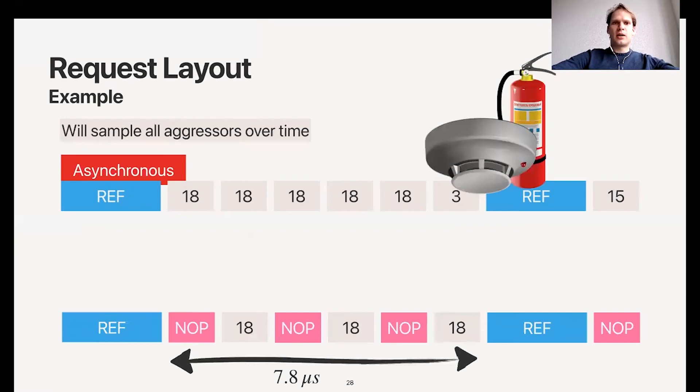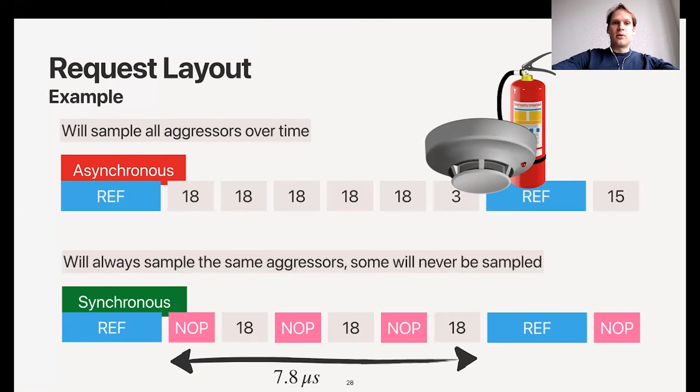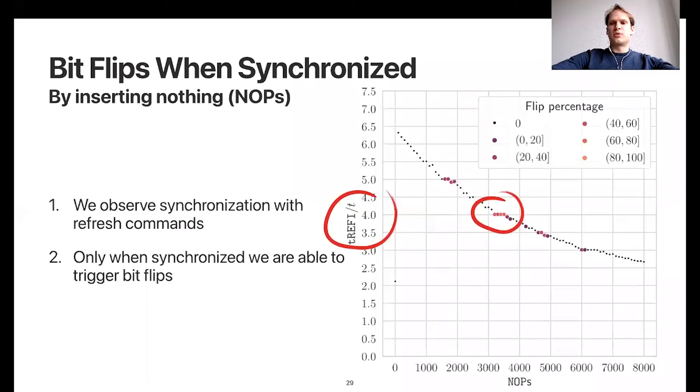Let's try to create a synchronous pattern where we slow down our pattern. We insert NOPs - these are not DRAM commands, these are instructions to do nothing but take time. We insert them here and they slow down our pattern, making it synchronous. Actually, when we did this, we were able to trigger bit flips. In this graph here, you can see on the y-axis how many times our pattern fits inside this refresh interval, and on the x-axis the number of NOPs we introduced. More NOPs means a slower pattern. You can see two things: first, you can clearly observe synchronization with refresh commands - the line flattens when the y-axis is a round number. We only get bit flips when we're in the synchronized state.